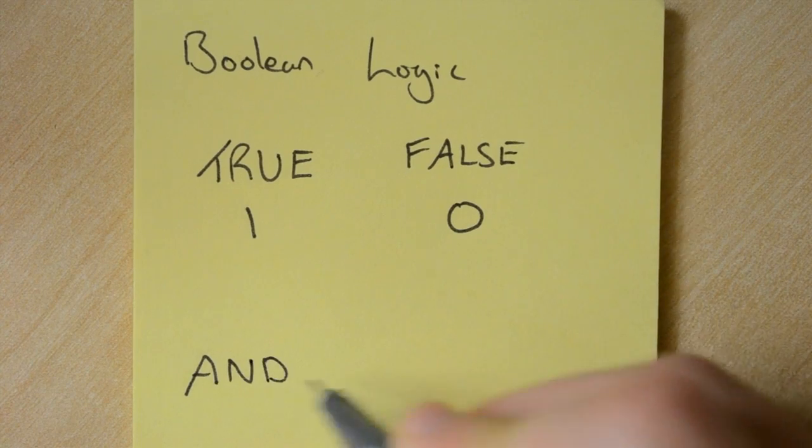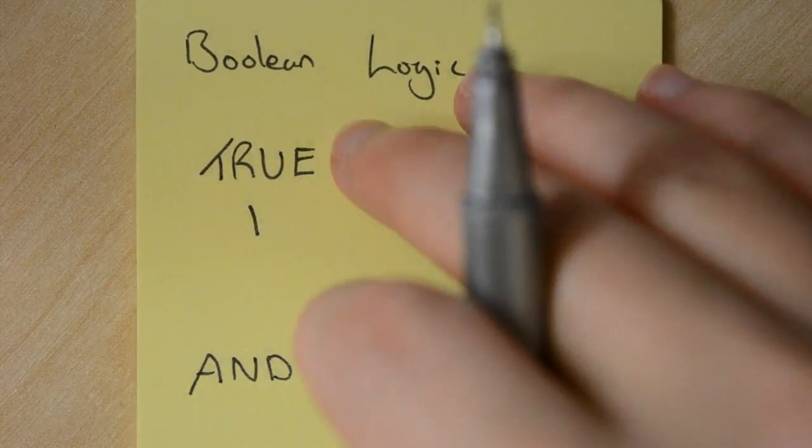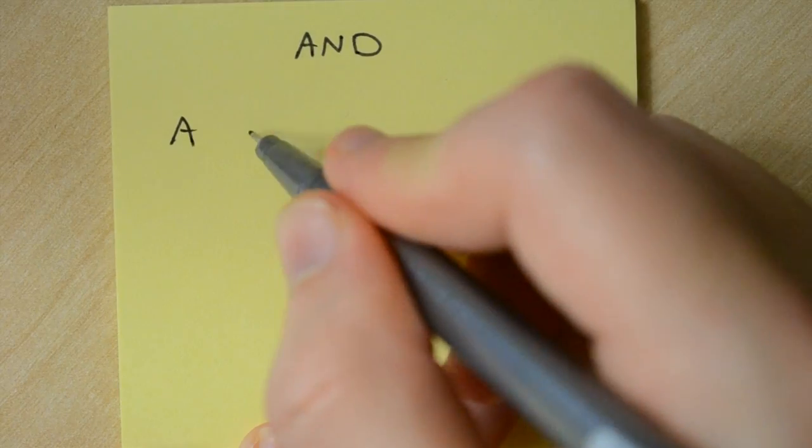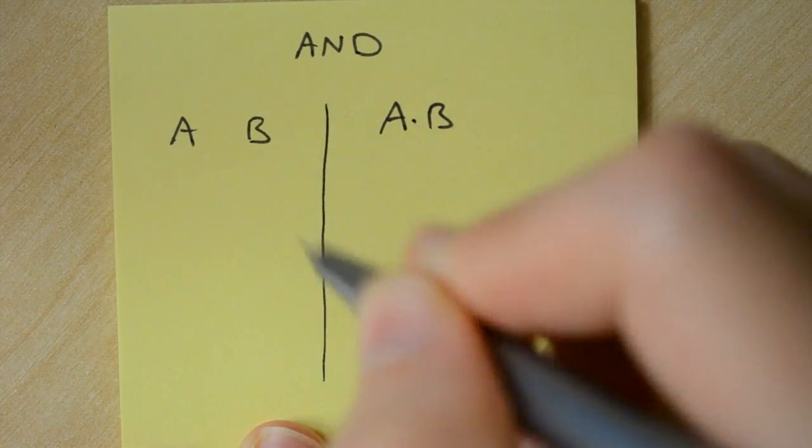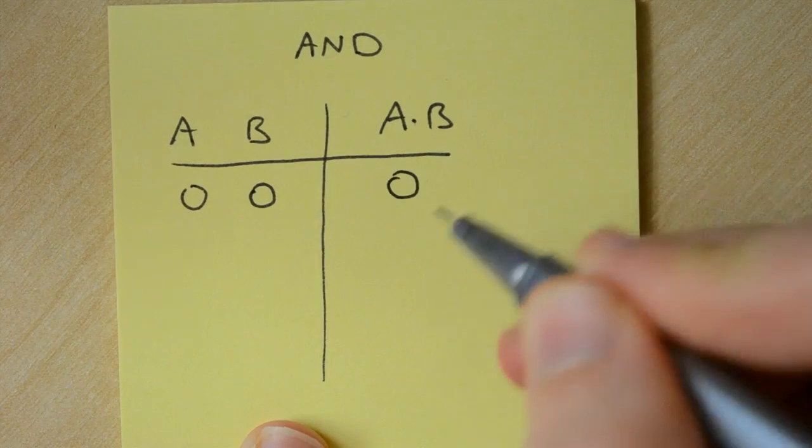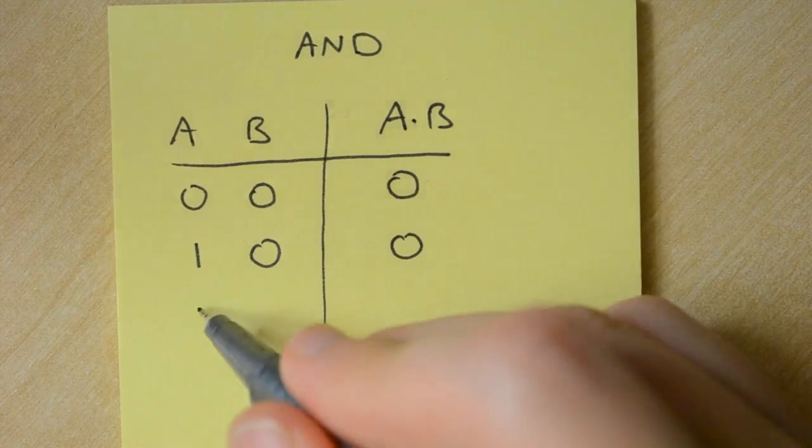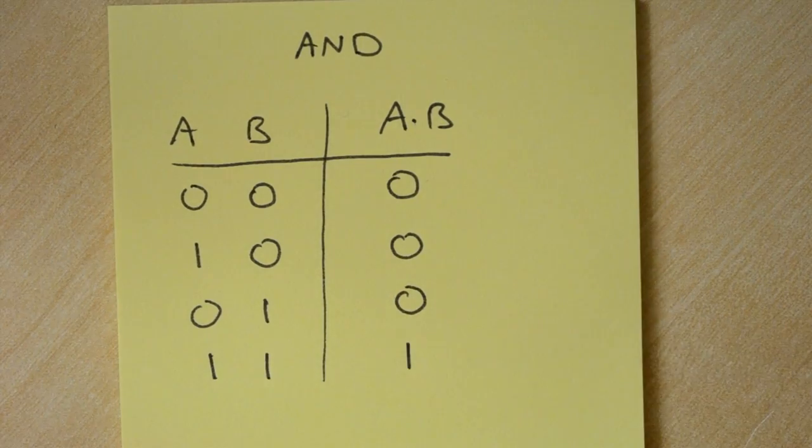There are also three basic operators of AND, OR and NOT. We can draw up a truth table to see how two inputs give an output. The AND operator returns true if and only if both A and B are true. So the truth table looks like this.